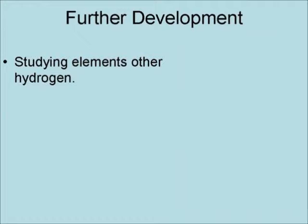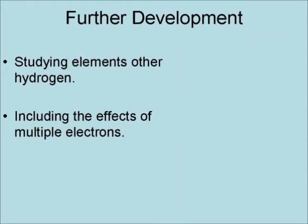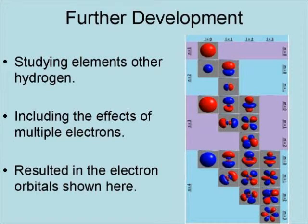Further developments have come from studying elements other than hydrogen, including the effects of multiple electrons. These studies resulted in the electron orbitals shown here. They are the places in an atom where electrons can actually be found.